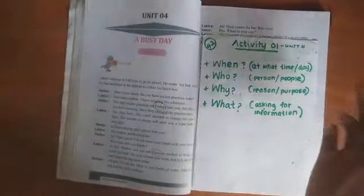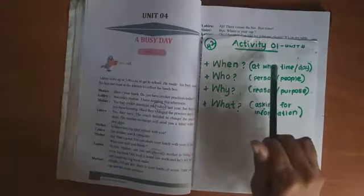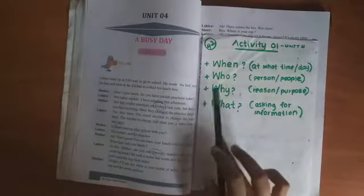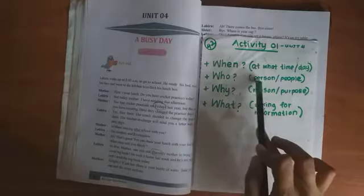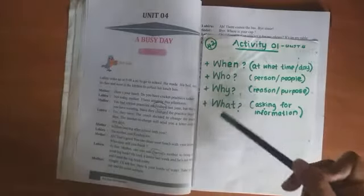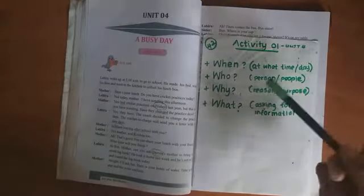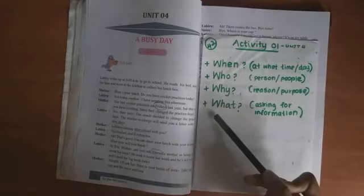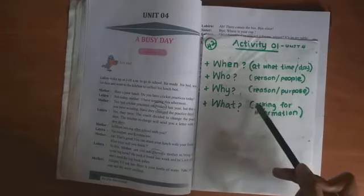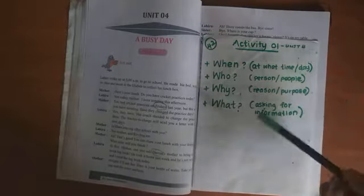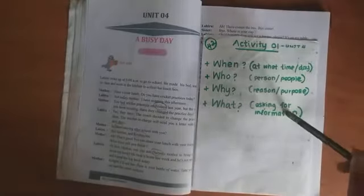When: we use this when we need to ask about a time or a day. When is your birthday? Who: when we are asking about a person or people. Who is your best friend? Why: when we need to know the reason or the purpose for something. Why didn't you come to school yesterday? What: when asking for information about anything. What is your name? What is your school?